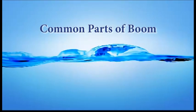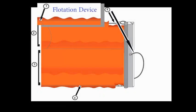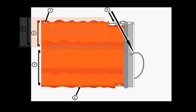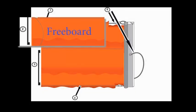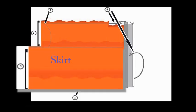This graphic shows the five basic parts of boom. Number one, the flotation device keeps boom at the surface level and traps floating oil. Two, the freeboard sits above water keeping oil from washing over the top. Number three, the skirt prevents currents from pulling oil under the boom.